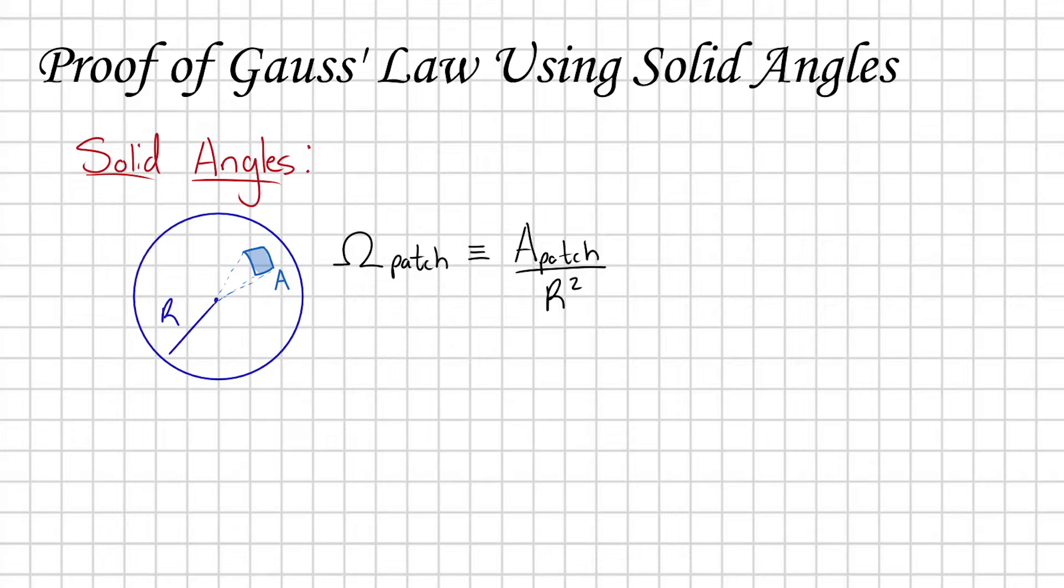This definition makes sense, right? Just like with a circle, you could define the angles subtended by an arc by taking the arc length divided by r.